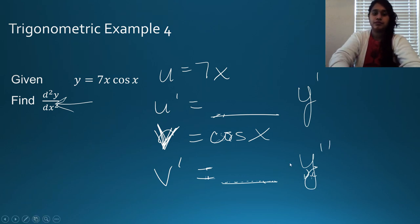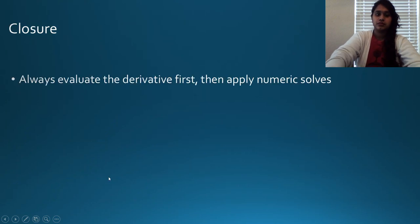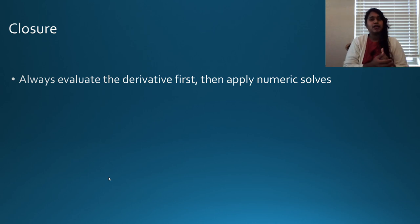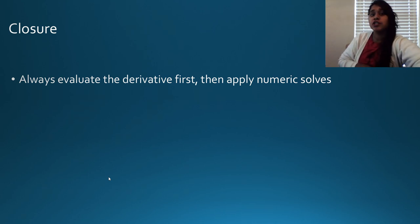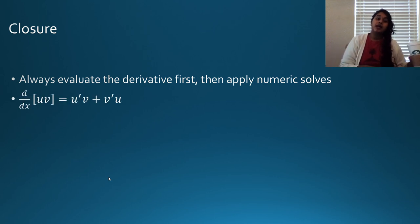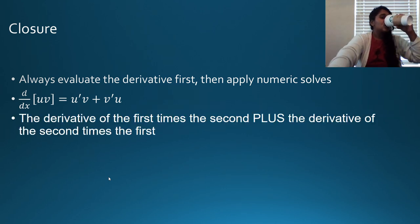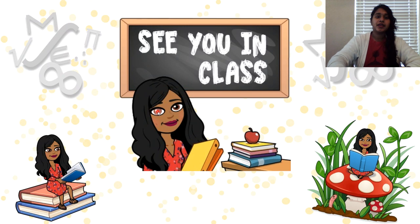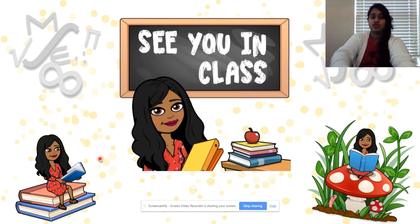Some closure: always evaluate your derivative first, then apply the numeric solves. I always did the full equation first, then plugged in numbers — make sure you do it that way, because you could end up solving for a function instead of a derivative. The product rule: the derivative of u times v is u prime v plus v prime u. Remember it as: the derivative of the first times the second, plus the derivative of the second times the first. Say that sentence 100 times before next class. Make sure you watch video 2.7 and video 2.8.